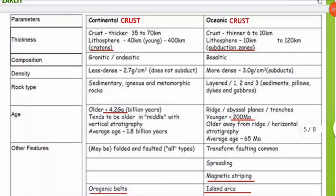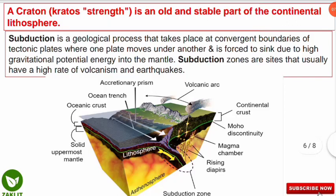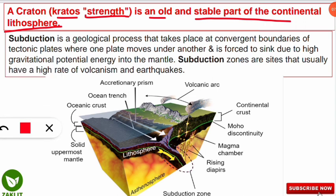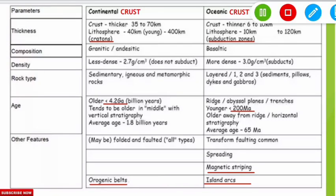Kratons come from the Greek word 'kratos', meaning strength. A kraton is an old and stable part of the continental lithosphere. Old stable cratons are present in continental crust and represent very stable regions. You can remember that kratons are the stable, experienced part of the continental lithosphere.